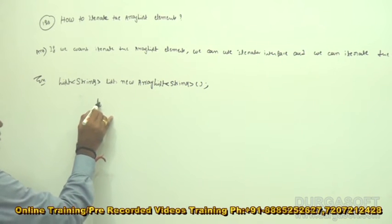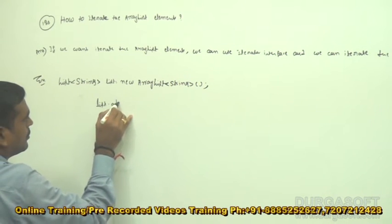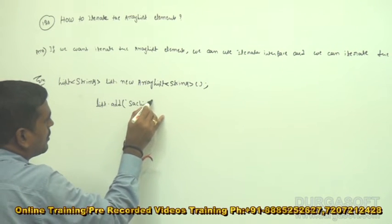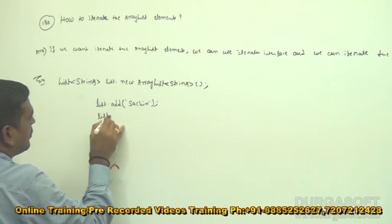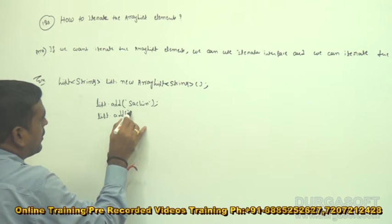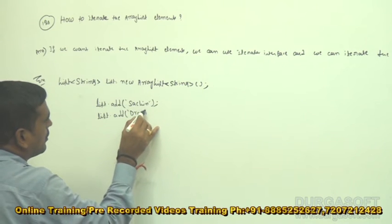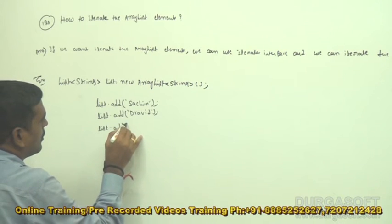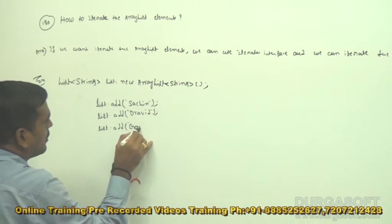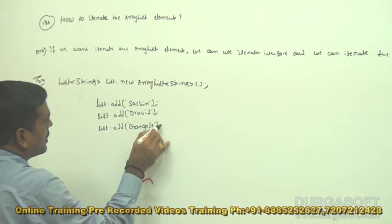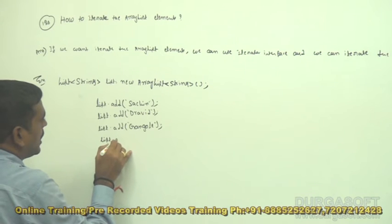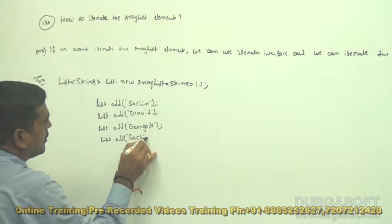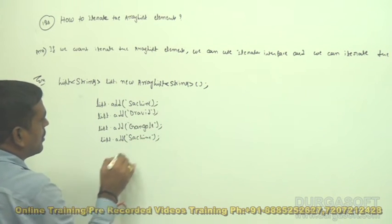After that, add the elements. List dot add, list dot add Sachin.